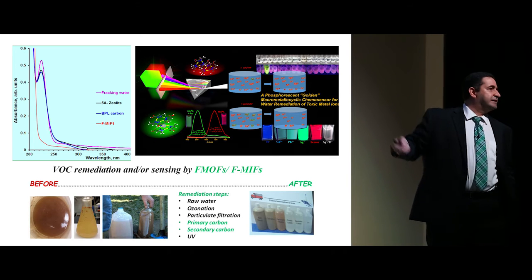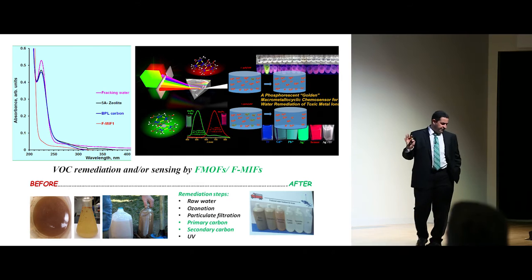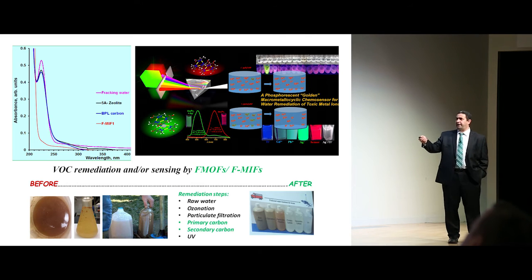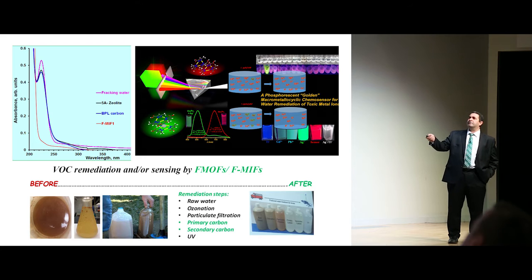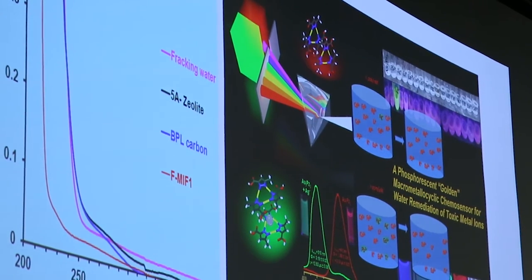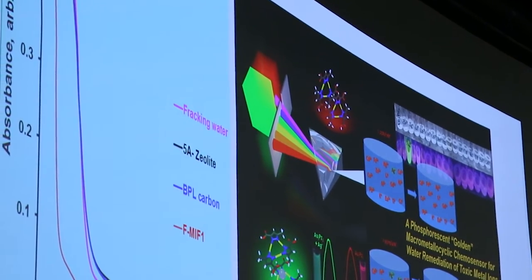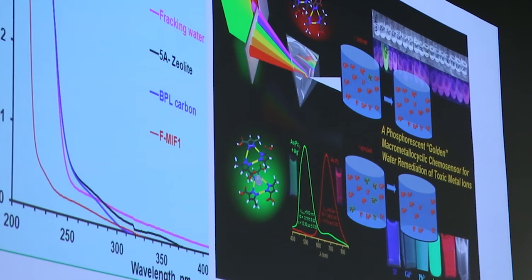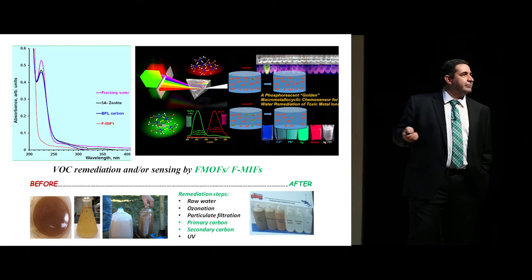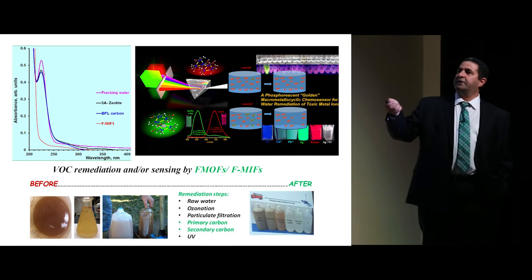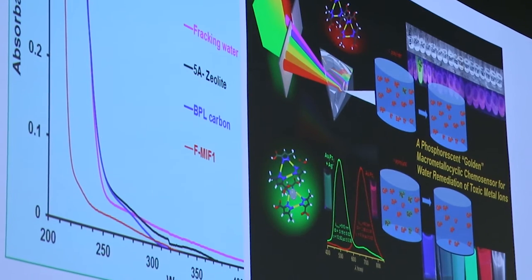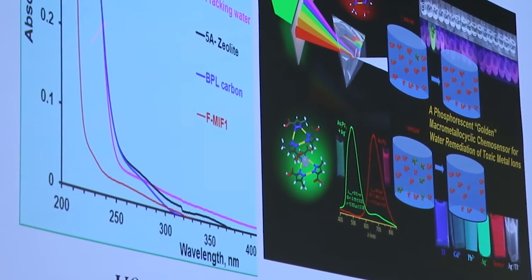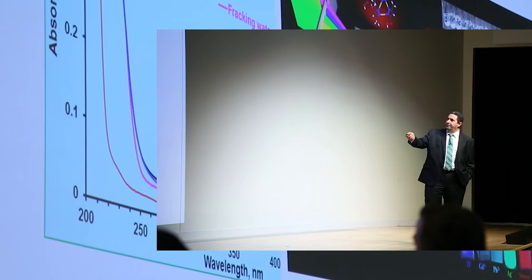If you add a zeolite filter — zeolites are one of the most common porous materials used in industry for catalysis and petrochemicals — and run the fracking water through it, the signal reduces by only a small fraction, less than 10%, from about 0.65 to 0.45. If you use BPL carbon, a commercial carbon filter, it does a little better but not by a lot. Look what happens when we use our FMAF or FMEF material — fluorous metal-organic or metal-inorganic frameworks — the signal completely disappears.